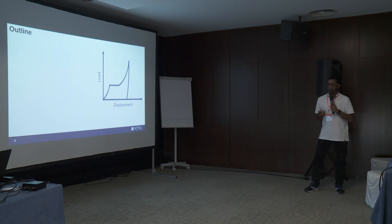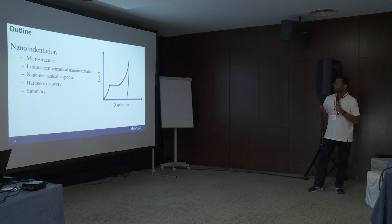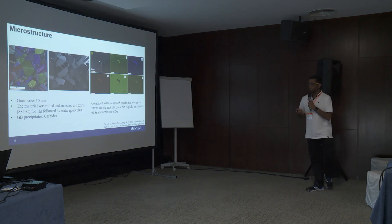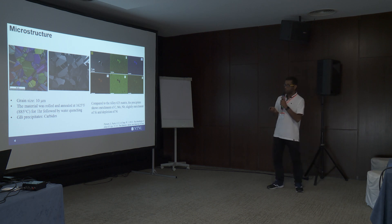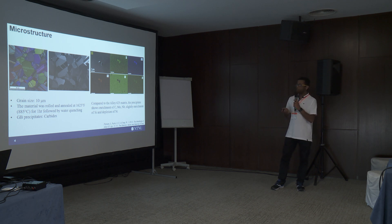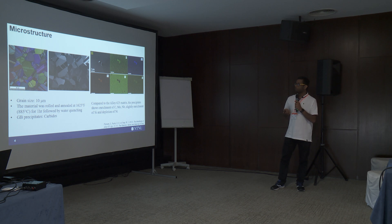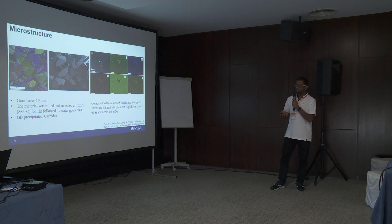My talk is mainly centered around characterizing these properties from the load-displacement data as a function of hydrogen concentration. The initial microstructure received from the supplier is homogeneous with a large fraction of annealing twin boundaries. From the BSE image, there are discrete fractions of white precipitates. EDS mapping revealed these precipitates are enriched with niobium, molybdenum, and carbon. Since the material was rolled and annealed at 850 degrees Celsius, we expect these precipitates to be of carbide type.